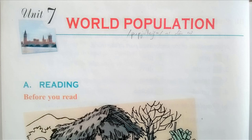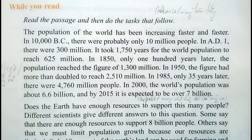Unit 7: World Population. Part A Reading. The population of the world has been increasing faster and faster. In 10,000 BC there were probably only 10 million people. In AD 1 there were 300 million. It took 1,750 years for the world population to reach 625 million.